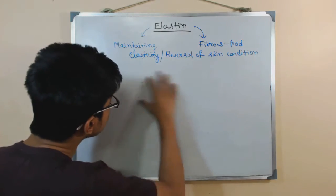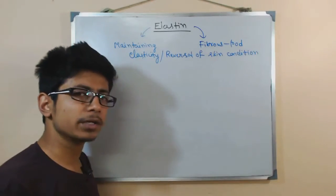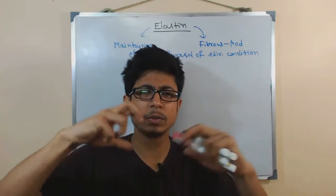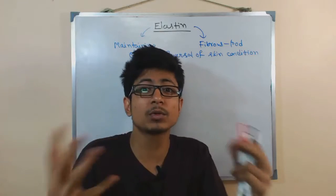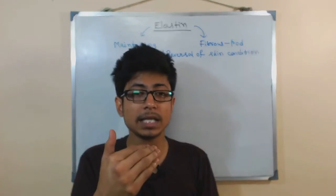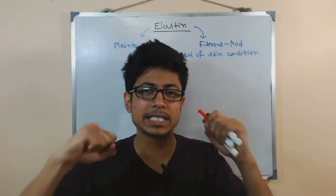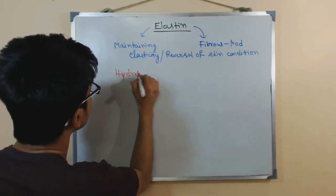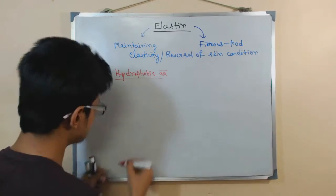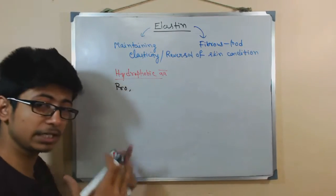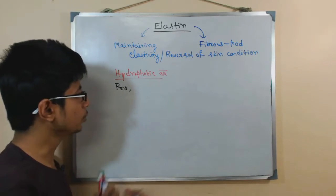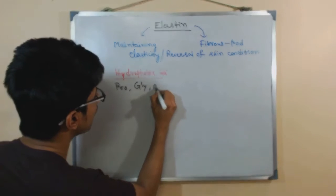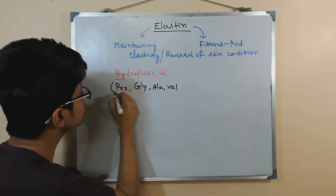What is the structural part of elastin? It is a fibrous, rod-shaped protein that can exist in two different forms. Elastin is made up of hydrophobic amino acids. Examples include proline, which contains a bulkier R-group; glycine, which is very small and has only a hydrogen as its R-group; and also alanine and valine.